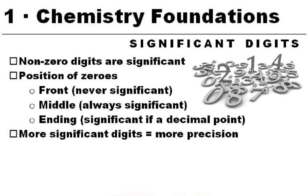Here's a quick look at significant digits. We need to remind ourselves that all non-zero digits are significant — those are easy. It's the zeros that we have to watch for, and you've got to watch for their positions. Also remind yourself that the more significant digits you have in a number, the more precise it is. So if we're talking about accuracy and precision, precision goes along with significant figures.